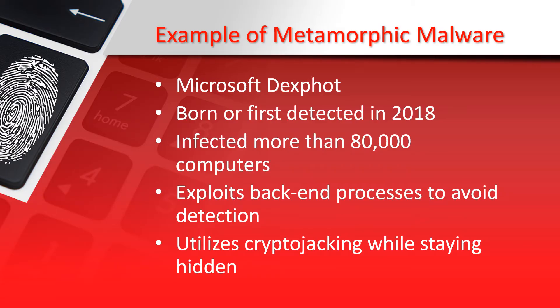An example of metamorphic malware is Dexfo. This type of malware exploits a combination of back-end processes to avoid detection by antivirus software. Microsoft reported that when Dexfo first arrived on the scene in 2018, it infected at least 80,000 computers and manipulated code from other programs to stay hidden. Dexfo also used a technique called cryptojacking — a scheme to use people's devices without their consent or knowledge to secretly mine cryptocurrency on the victim's dime. Microsoft has since updated their operating system with a new Defender Advanced Threat Protection that should detect and remove the malware.